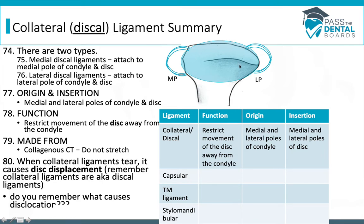I prefer to call these discal ligaments because that tells you more about what they do — they connect to the disc, prevent its movement, and keep it solid right above the condyle. Note the difference between disc displacement and dislocation: dislocation is when the disc goes too far forward and gets stuck in front of the articular eminence, whereas disc displacement can occur in any direction — the disc moves in any of three dimensions — and the discal ligaments prevent that.